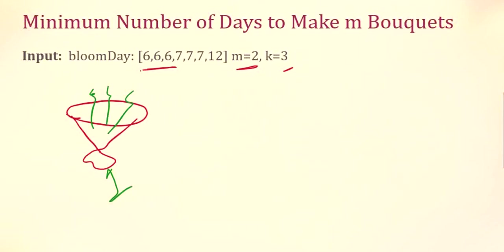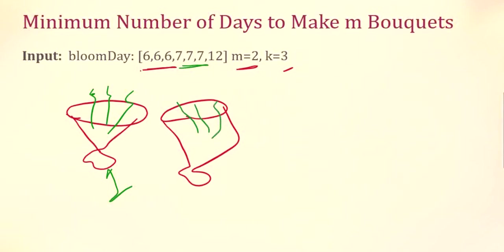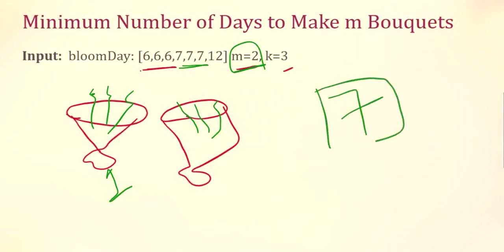Now it's time to move to our second bouquet. To make the second bouquet we need three more flowers. For those three more flowers we need to wait one more day — on the seventh day we will get three more flowers and make our second bouquet. The requirement is two bouquets, so the minimum number of days we need to wait is seven. That is our output.